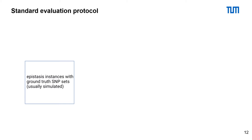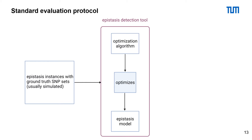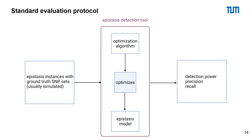To illustrate our motivation, let's have a look at the standard evaluation protocol. The epistasis detection tool gets epistasis instances with a ground truth SNP set, which is usually simulated, as input. Then the epistasis detection tool uses an optimization algorithm to optimize for a given epistasis model. Afterwards, the highest scoring SNP sets are used to evaluate the detection power, the precision and the recall.